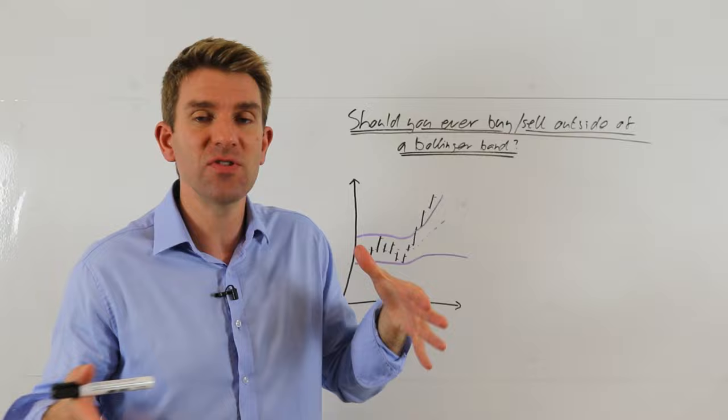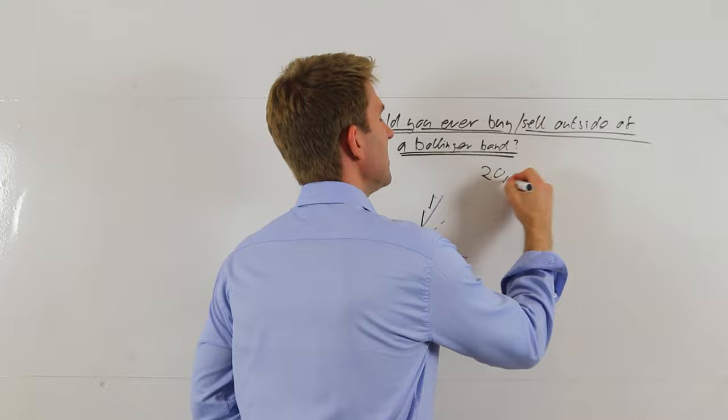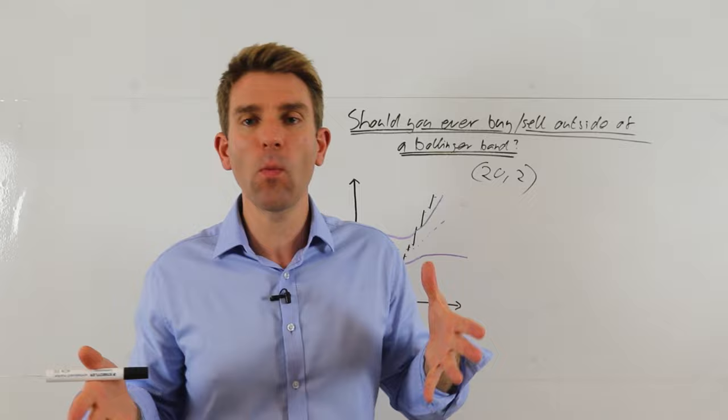Then you set the standard deviations outside of that moving average and usually the settings are 20 and 2. Some people use 2.5, 3 you can use but generally it's quite wide and you don't often get many tags. Obviously the further out you go the less likely you're going to get a tag of it.